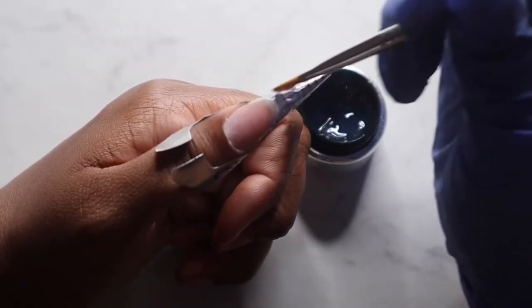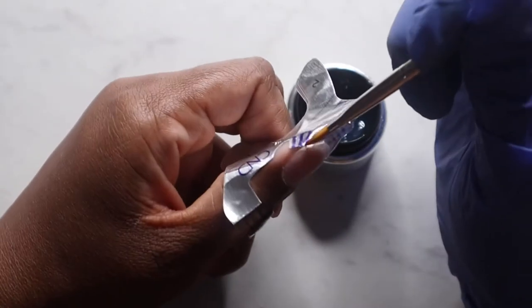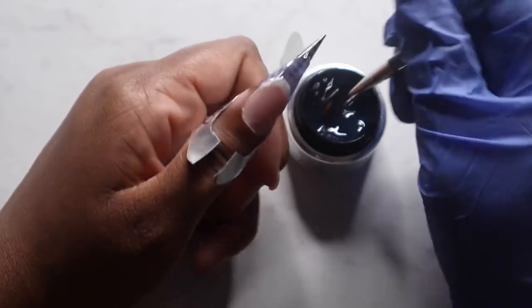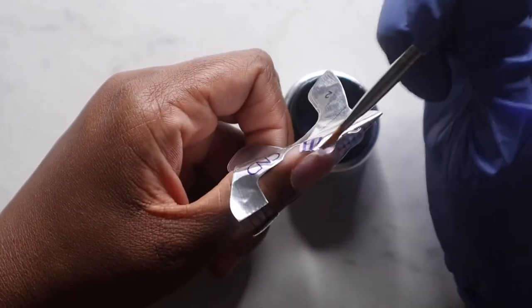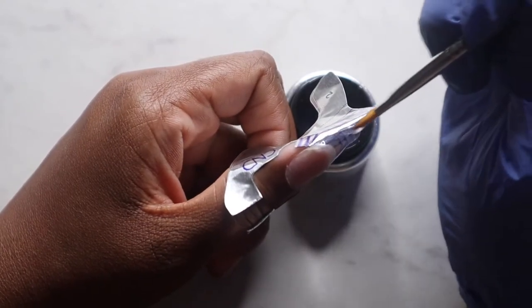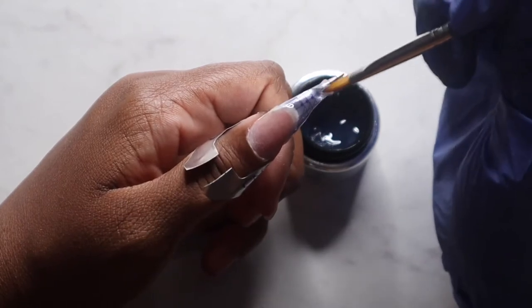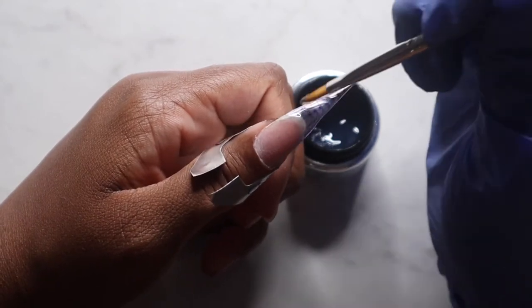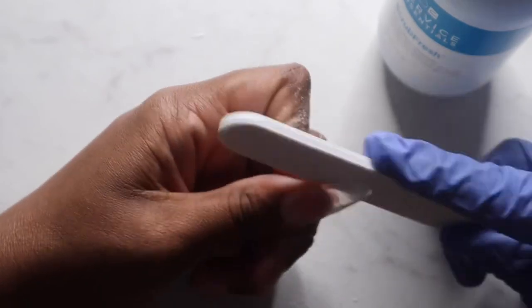Then I proceed to start with shaping my tip out first. It helps with the nail structure. After structuring out the style shape nail, I then proceed to take the form off and start shaping my almond shape nail.